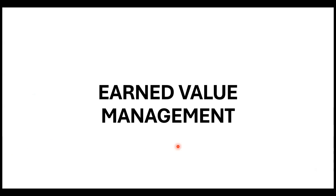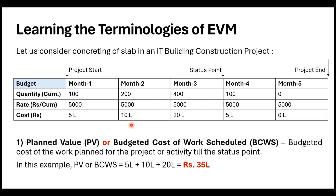Starting with earned value management theory, I've taken a very basic example to help you understand all the terminologies — there will be almost 10 to 12 basic terminologies. The example involves one activity of five months duration. The project starts at a certain point and we are noticing the status after the completion of the third month.